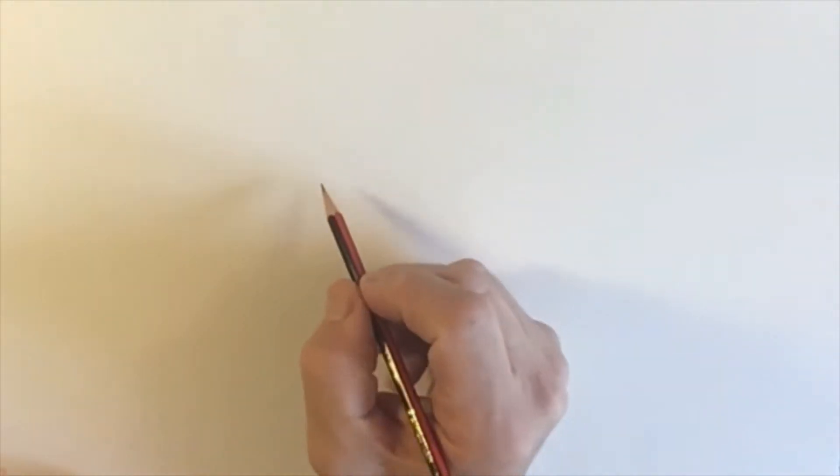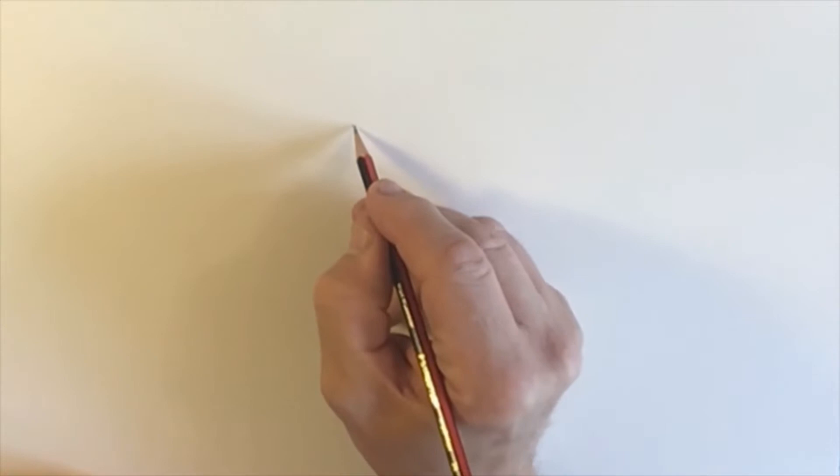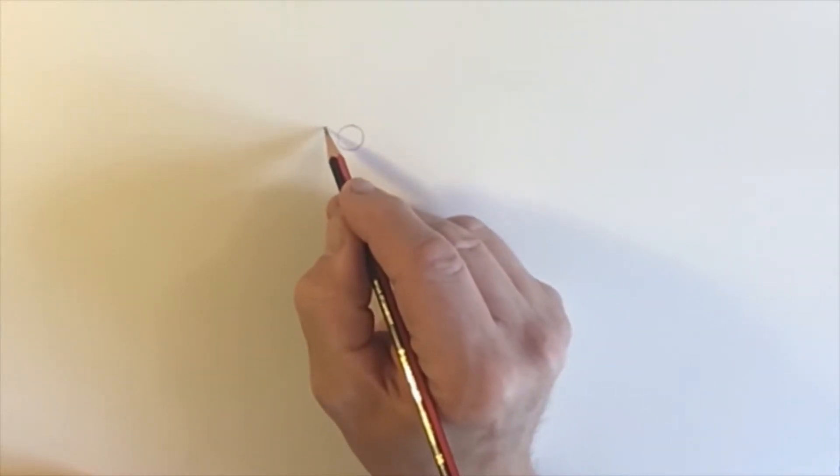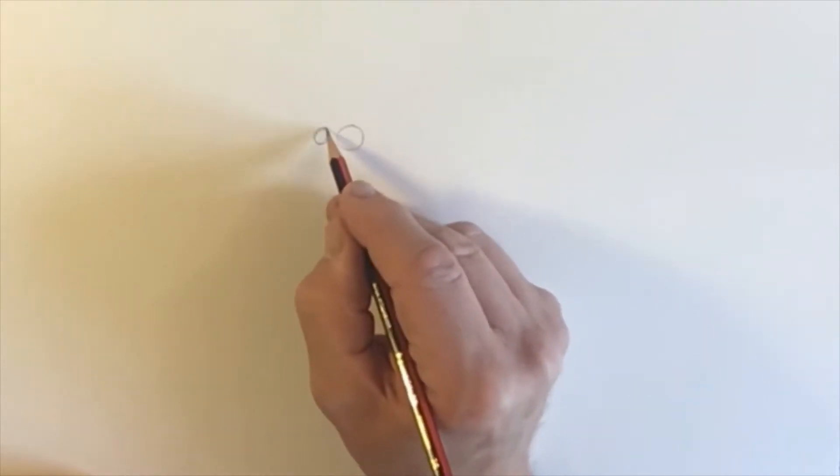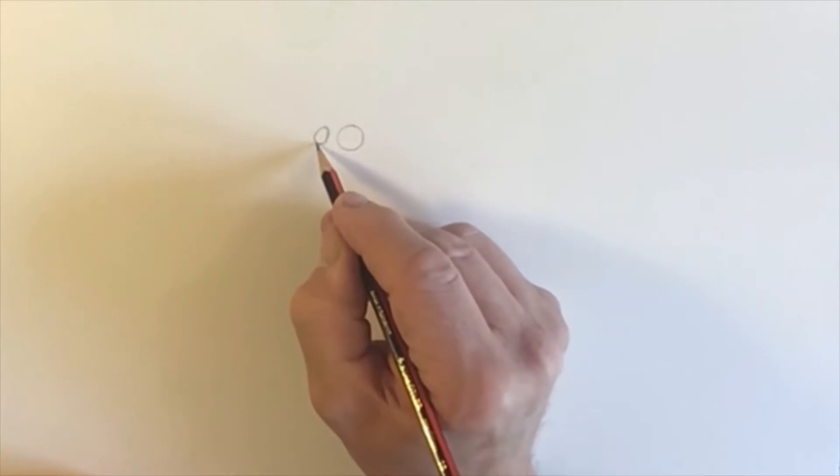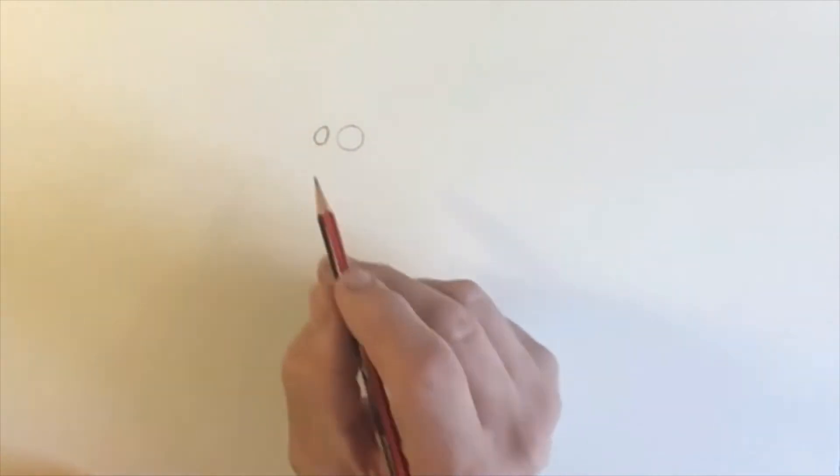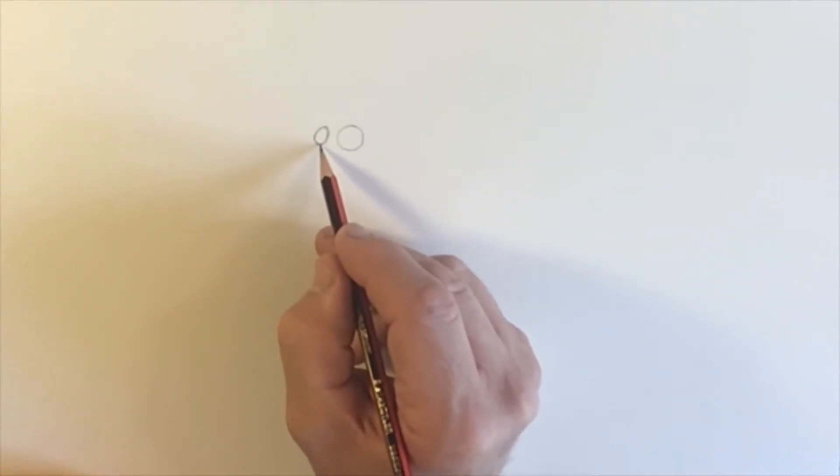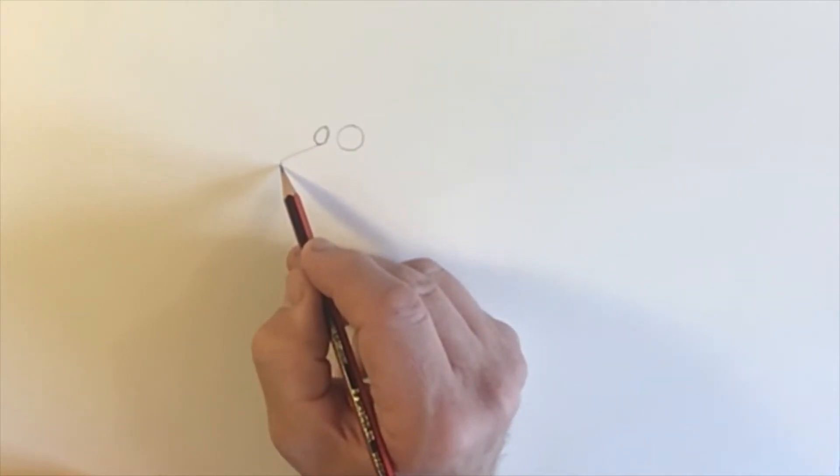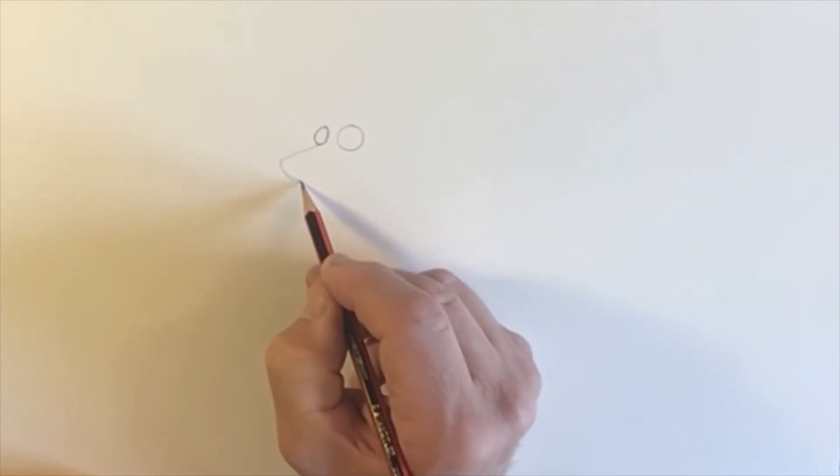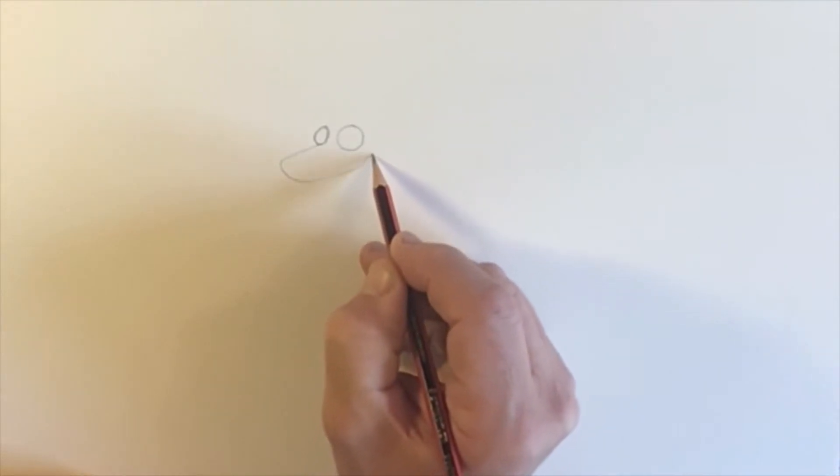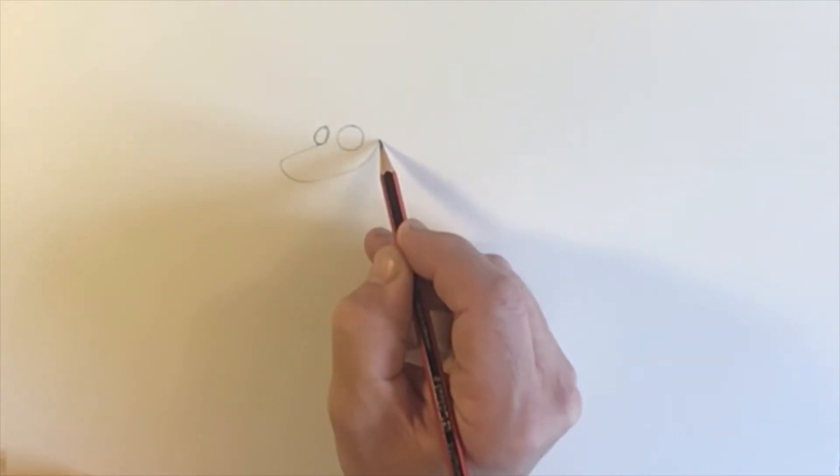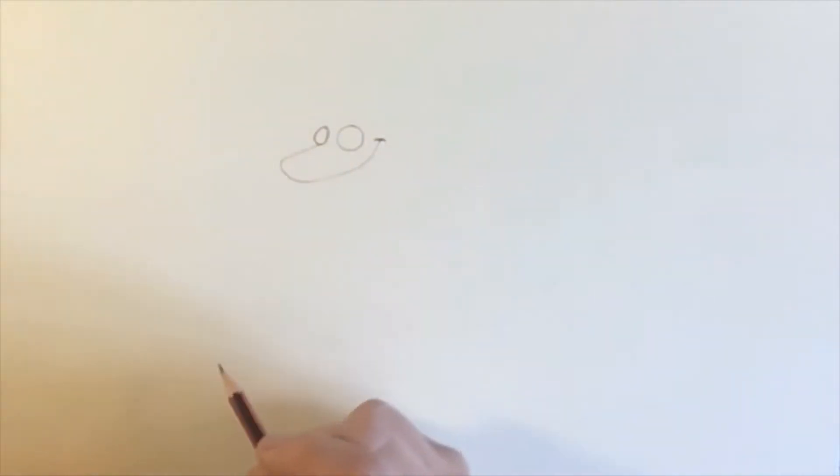So I think for a start we'll do two circles. Well actually this one's not really a circle, that one's a circle and this one's more like an oval. This is going to be the snake's eyes. And then from the bottom of this eye, we have a straight line coming out and it's going to go round and then straight back again all the way up to here. This is going to be the back end of the snake's smile.